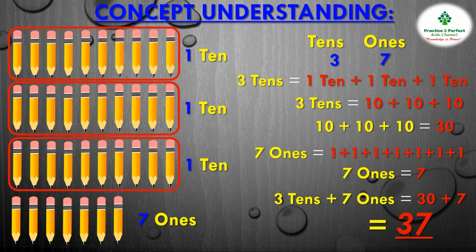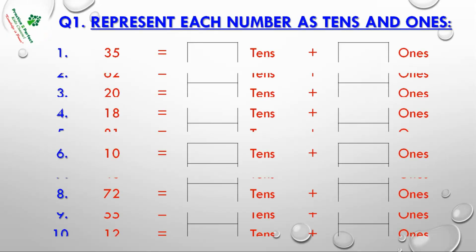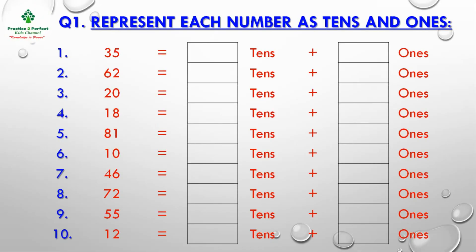Hope you have understood this method of grouping numbers and placing them under 10s and 1s places. Let us now practice some questions. Question 1: Represent each number as 10s and 1s. See the first example — the number given is 35. You know that the right place is for 1s and to its left is the 10s place, so the first answer will be 3 tens and 5 ones. In the same way, complete the rest of the questions.